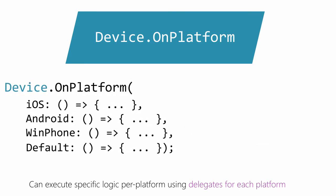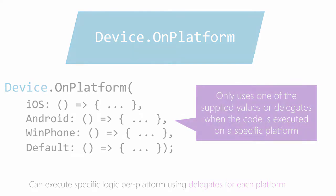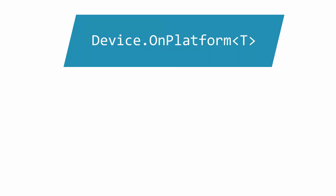So, if we were on iOS, then only the iOS delegate would be executed. Or, if it is null, then the default delegate is executed. No result is returned from this method.